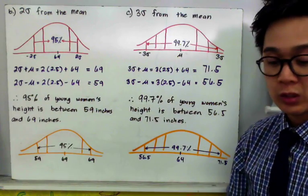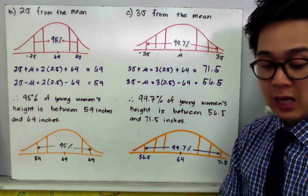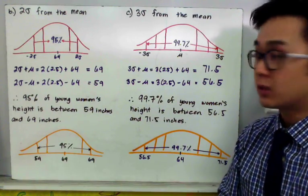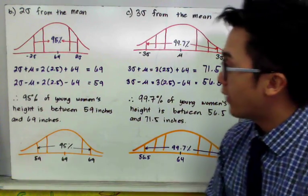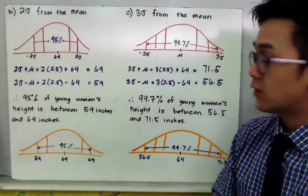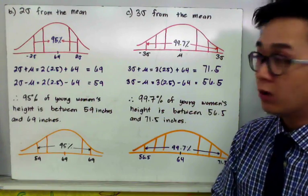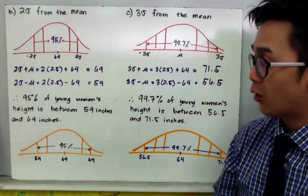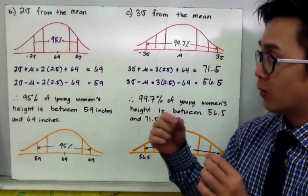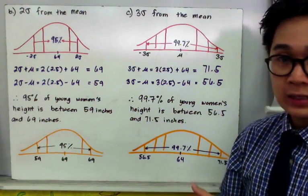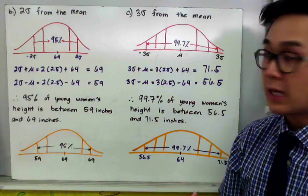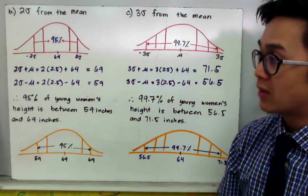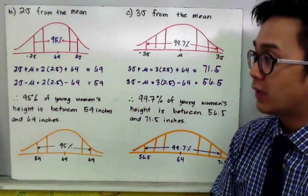This is a bigger range of values compared to the previous one because we are using 3 standard deviations. This is how we use the empirical rule to find the range of values that fall within one, two, and three standard deviations away from the mean.